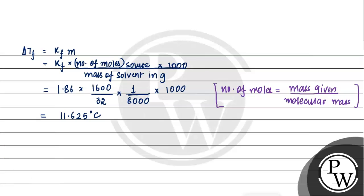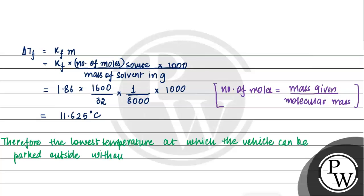Therefore, the lowest temperature at which the vehicle can be parked outside without the danger that the radiator will freeze is minus 11.625 degrees Celsius.